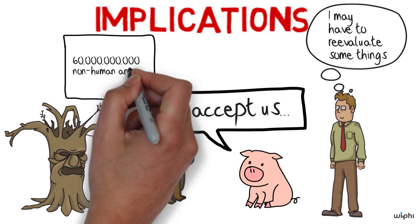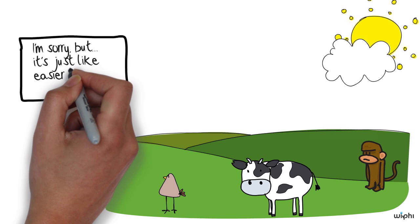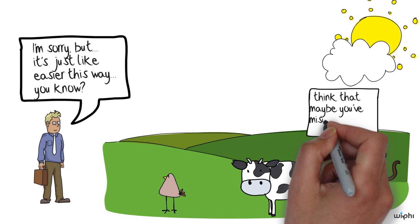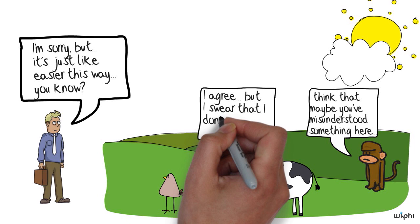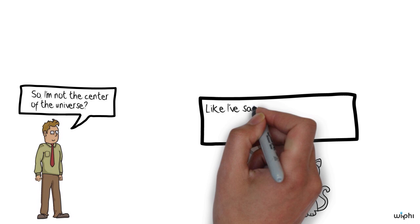Now at this point it might be very tempting to say, okay maybe all and only humans have moral status after all because our lives would be much easier if this were true. But keep in mind that 100 years ago or 200 years ago it might have been very tempting for white men to say, okay maybe all and only white men have moral status after all because their lives would be much easier if that were true. And what that shows is that which theory of moral status we accept has to depend on which theory of moral status seems most plausible and not on which theory of moral status happens to be most convenient for us.